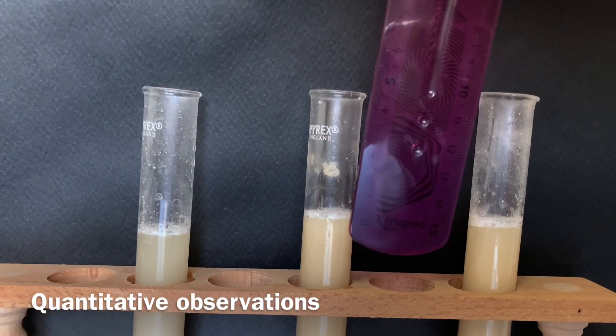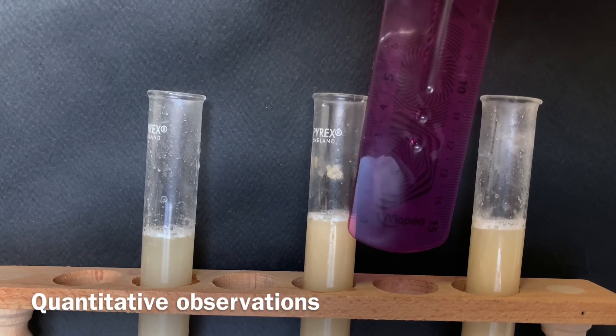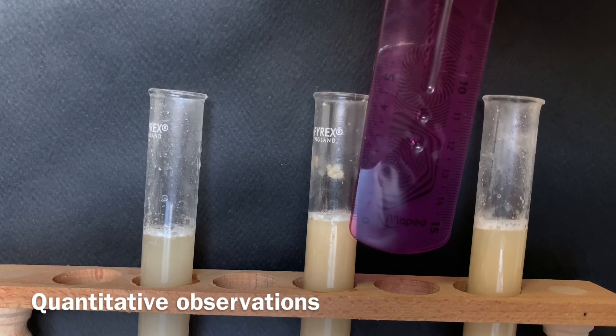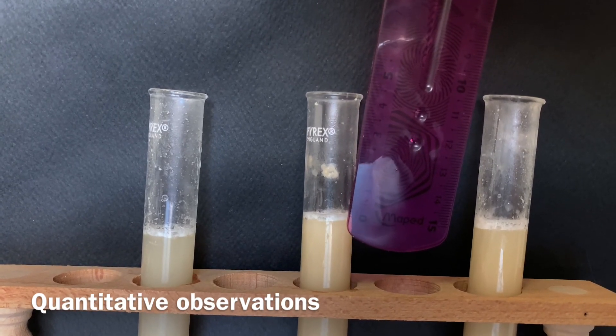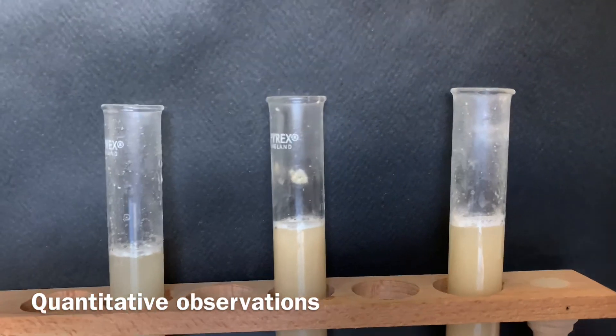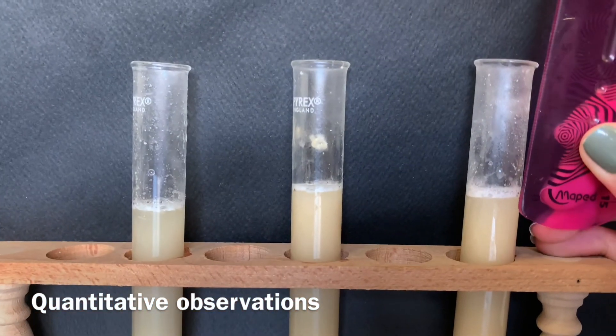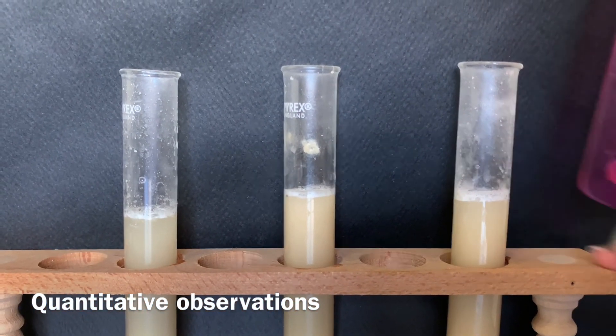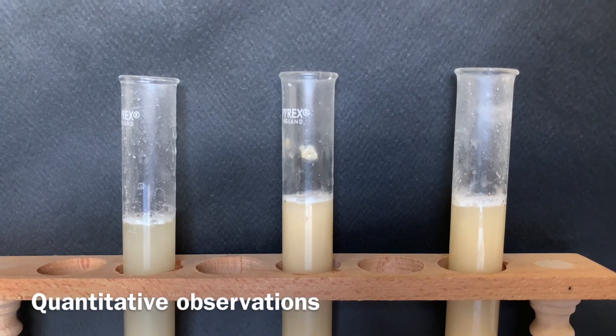In the second test tube we have around 0.3 or 0.4 centimeters, and in the last test tube around 0.6 centimeters of bubbles were produced.